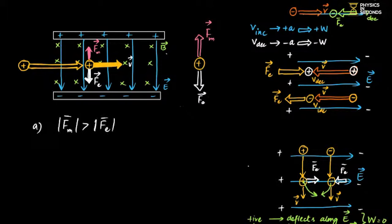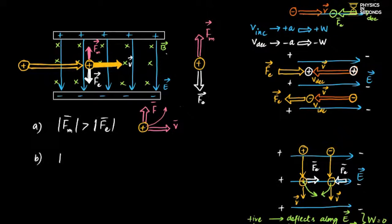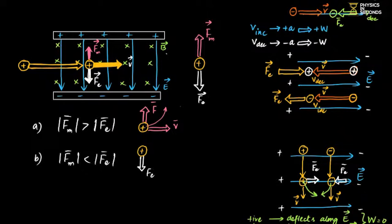Three cases arise: (1) If magnetic force > electric force, the resultant is upward — the positive charge deflects towards the positive plate. (2) If magnetic force < electric force, the resultant is downward — the charge deflects towards the negative plate. (3) If magnetic force = electric force, they cancel out and the charge moves undeflected.